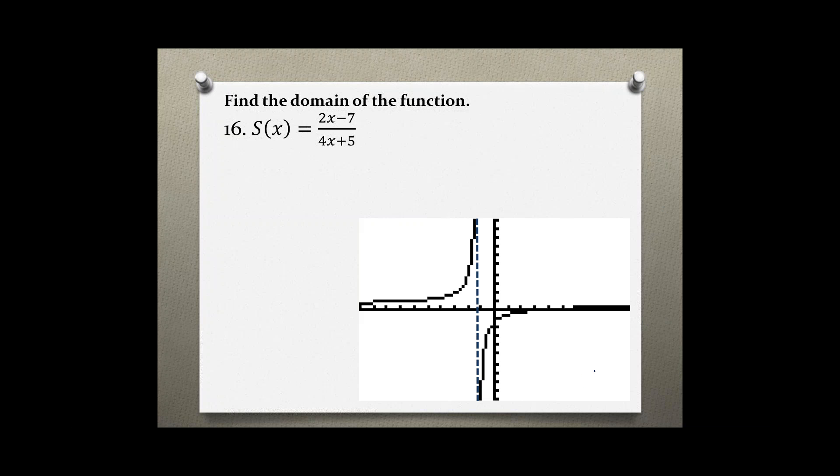So mathematically, to find this value, you take the denominator of the function—in this case, 4x + 5—and you set it equal to zero. Now solve for x.